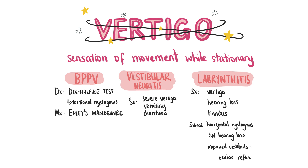Vertigo refers to a sensation of movement when stationary. Patients may feel unsteady and nauseous. Dizziness without a sensation of movement is not vertigo. It may be due to cardiovascular causes such as arrhythmias or postural hypotension, blood pressure medications, anxiety or intoxication, among other causes. One cause of vertigo is benign paroxysmal positional vertigo, where crystals in the semicircular canals move when the patient turns their head, stimulating stereocilia inappropriately. Patients present with intermittent bursts of vertigo without hearing loss or tinnitus. You can perform the Dix-Hallpike test to confirm the diagnosis; torsional nystagmus is indicative of BPPV. BPPV can be managed by regularly performing the Epley manoeuvre.